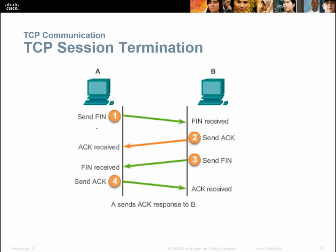Here's another way to look at it. Computer A sends the FIN. It's received. Computer B sends the acknowledgement — the ACK — confirming the FIN is received. Then it sends an ACK back that it's received. So three-way handshake: one side sends the acknowledgement, sends the FIN, and gets one back.